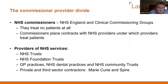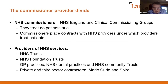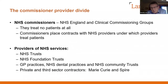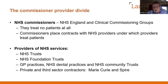The commissioner-provider divide that operates in the NHS means that NHS commissioners — NHS England and CCGs — who don't treat any patients, their job is to place contracts with NHS providers under which providers treat patients. The providers of NHS services are NHS trusts, mental practices, community trusts, private and third sector contractors such as Marie Curie and Spire. All providers are given money not under a funding allocation, but under what is almost always an annual contract.